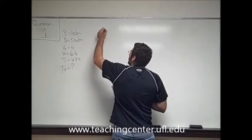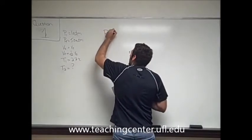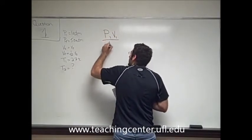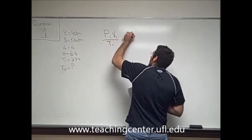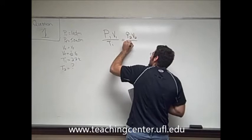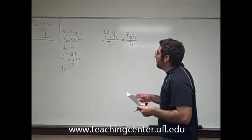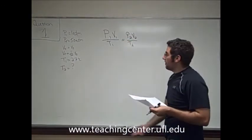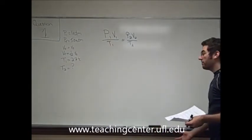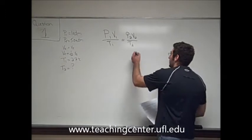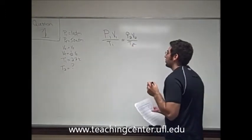So we go back to our gas law that says P1 V1 over T1 is equal to P2 V2 over T2. So we have an initial pressure, we have an initial volume, we have an initial temperature, and then we have a final volume and a final pressure. So we have all the information we need to find temperature 2.